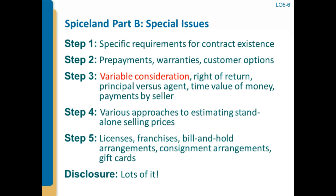Step five involves troublesome contractual features that affect the timing of revenue recognition: license arrangements, dealing with franchises under this new standard, bill-and-hold arrangements, consignments, gift cards. And then finally, a big thing with this new standard is disclosure. In practice, people are most concerned about the volumes of disclosure the standard seems to require. That's going to get nailed down and develop over the next couple of years as this standard comes online.